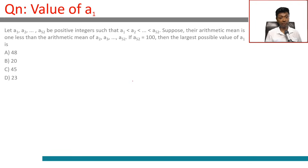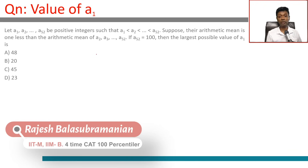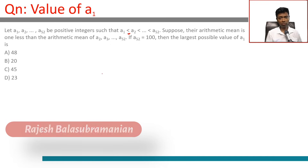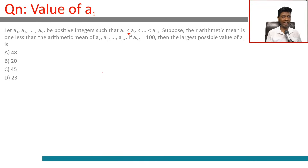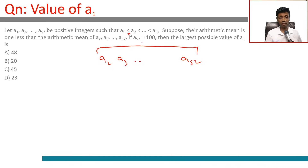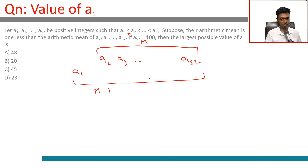a1, a2, a3, all the way till a52 are positive integers where a1 < a2 < a3 < ... < a52 — strictly less than, not less than or equal to. Suppose their arithmetic mean is one less than the arithmetic mean of a2 to a52. Let the arithmetic mean of a2 through a52 be m, so the arithmetic mean of a1 through a52 is m minus 1. Given that a52 is 100, find the largest possible value of a1.